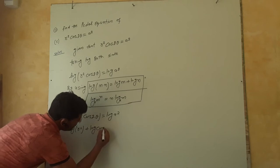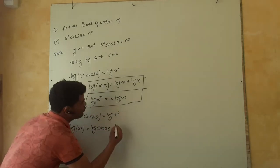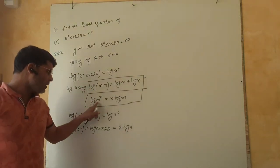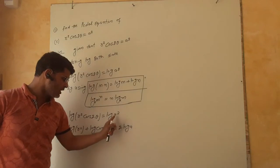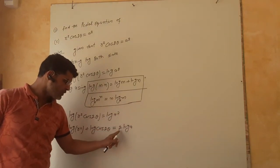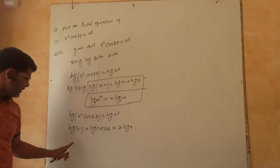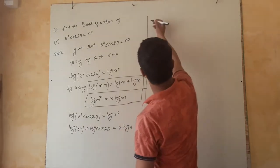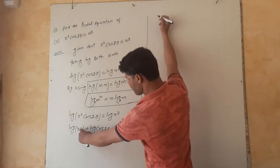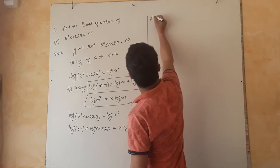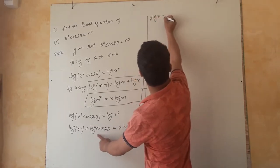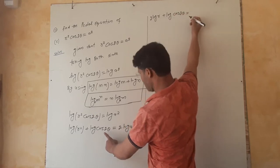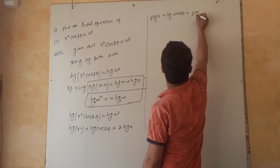log of cos 2θ is equal to 2 log A. By using the rule log M to the power N is equal to N log M, we get 2 log R plus log cos 2θ is equal to 2 log A.